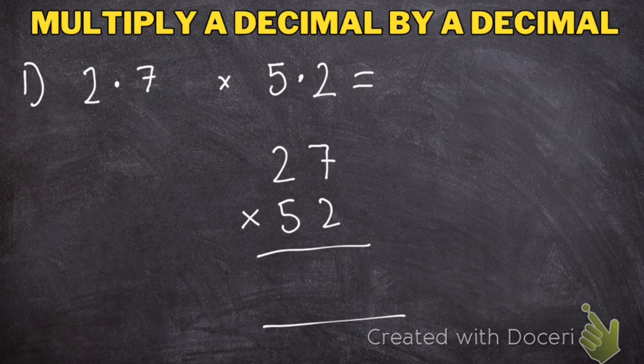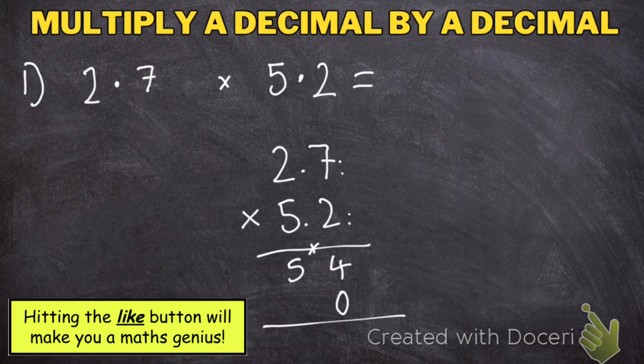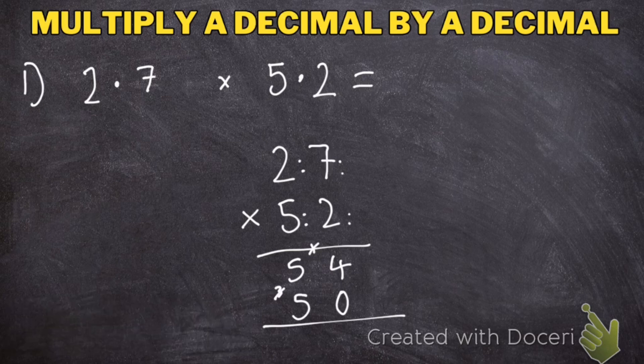I'm going to do this as a regular multiplication question. 2 times 7 is 14. 2 times 2 is 4, add 1 makes 5. Then I'll put my 0 down. 5 times 7 is 35. 5 times 2 is 10, add 3 makes 13.